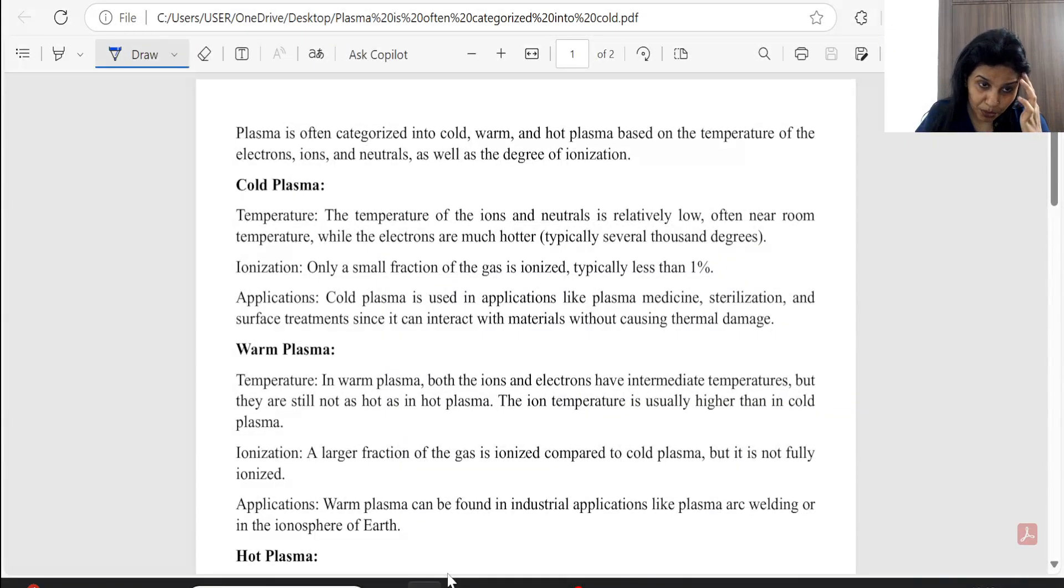Now, let's see, it's theoretical, cold plasma, warm plasma and hot plasma, so you have to see all these definitions here. Plasma is often characterized in cold, warm and hot plasma based on the temperature of electrons, ions and neutrals as well as degree of ionization.